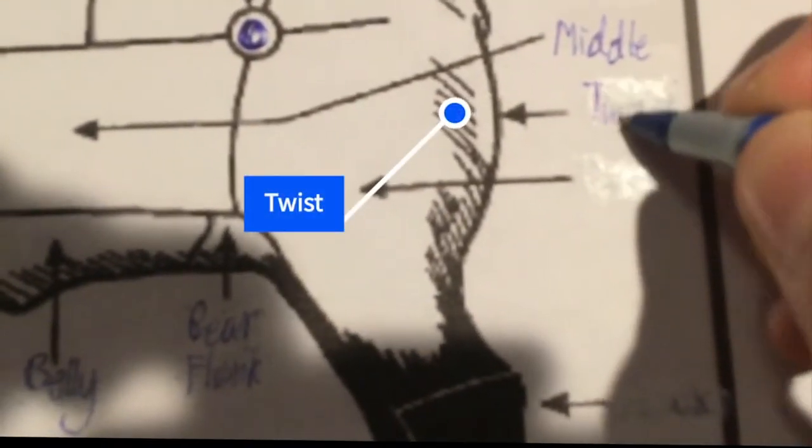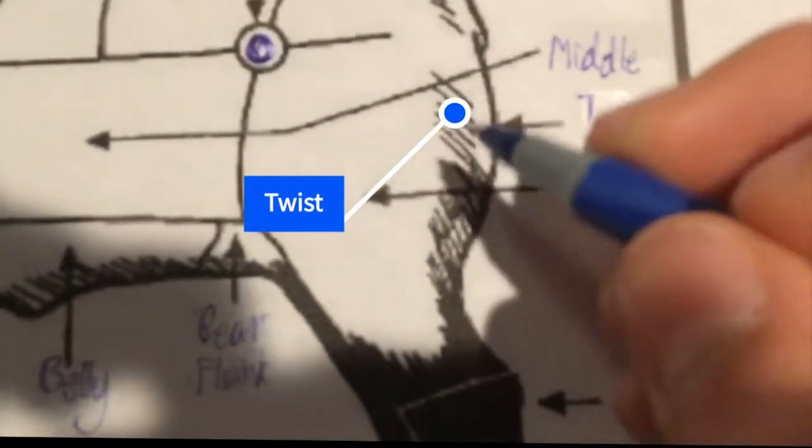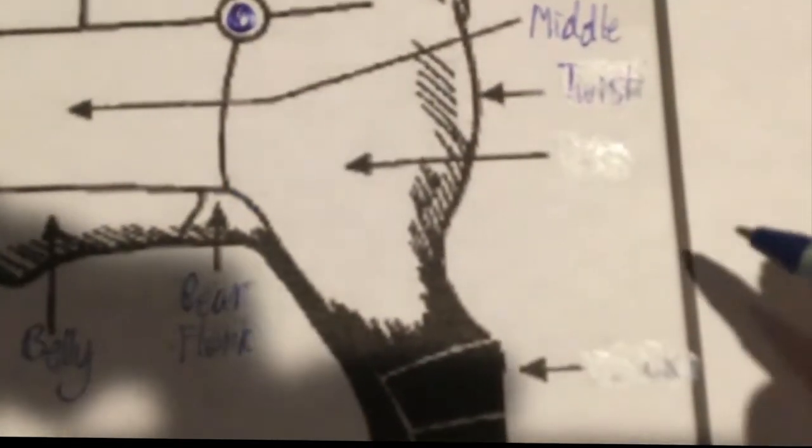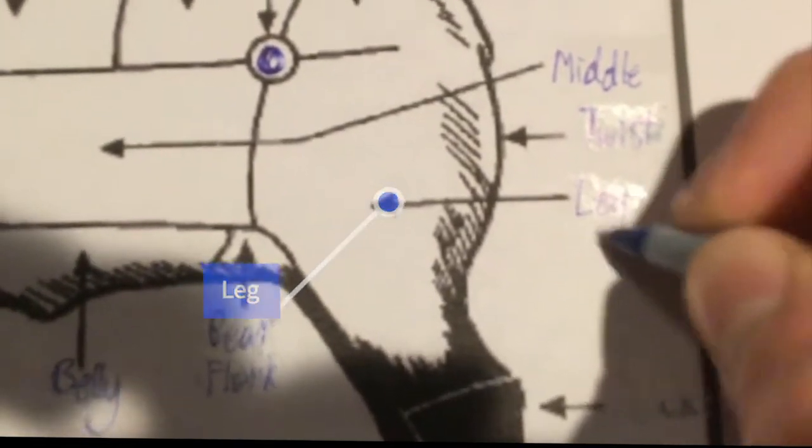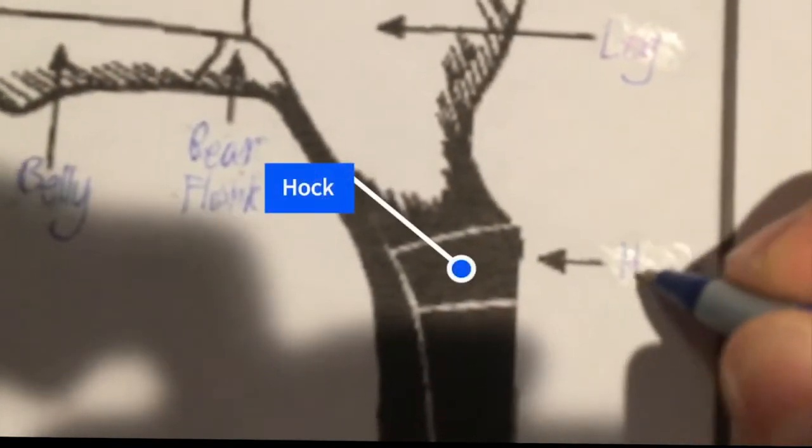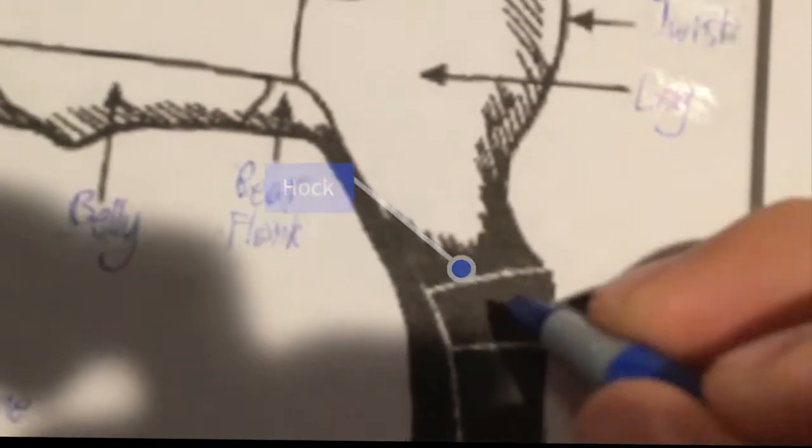And here's the twist right here. And this is the leg. And some of the parts of the leg is the hock, which is right here.